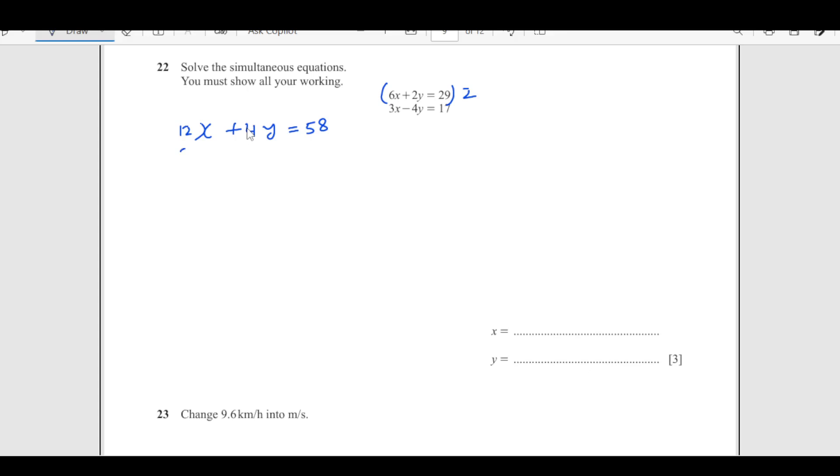Then we have 3x minus 4y equals 17. Now you add all of them. When you add this and this goes, this is 15x. When you add this, this is 75. So from here x is 75 over 15, x is 5.